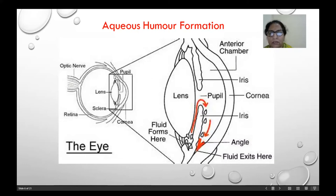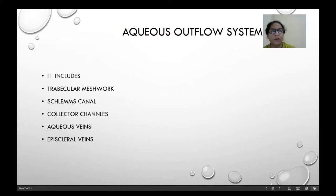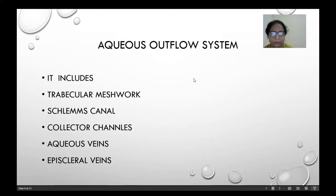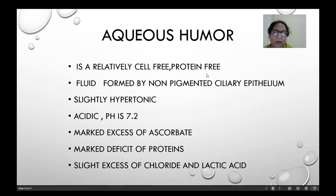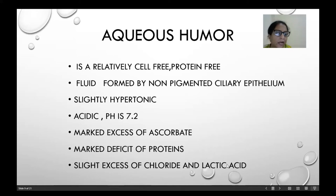Aqueous humor formation: aqueous humor is regularly formed and replaced after every 4 hours. Fluid is formed by the ciliary body, enters the anterior chamber, and exits via the aqueous outflow system, which includes the trabecular meshwork, Schlemm's canal and collector channels, aqueous veins, and episcleral veins. Aqueous humor is relatively cell-free and protein-free, formed by non-pigmented ciliary epithelium, slightly hypertonic, acidic at pH 7.2, with marked excess of ascorbate, deficit of proteins, and slight excess of chloride and lactic acid.